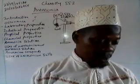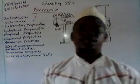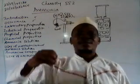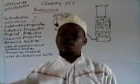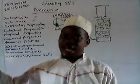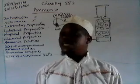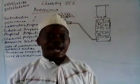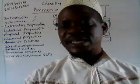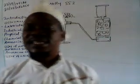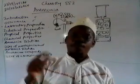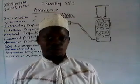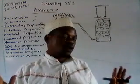Laboratory preparation. The common method by which ammonia is prepared in the laboratory is by heating a mixture of an ammonium salt with an alkali. So, any time a compound is heated with an alkali and an ammonia gas is liberated, that compound is actually an ammonium salt. This is often used in qualitative analysis.